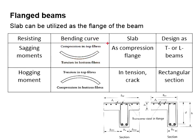Under sagging moment, there is tension at the bottom part of the beam and compression at the top part of the beam. As for the slab, which is located at the top part of the beam, it undergoes compression.